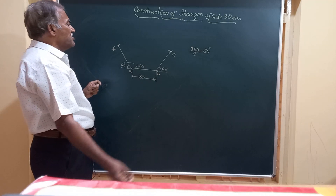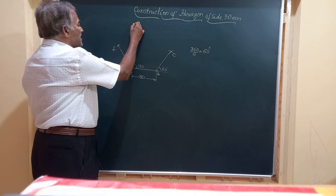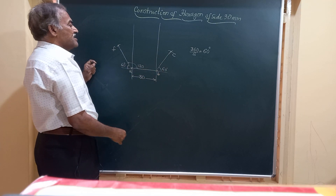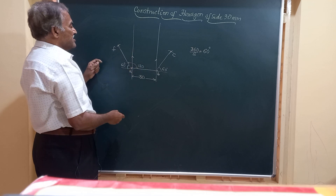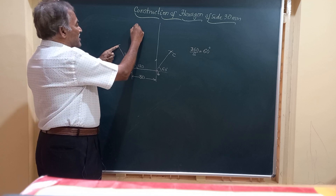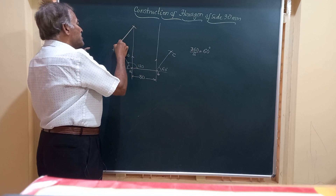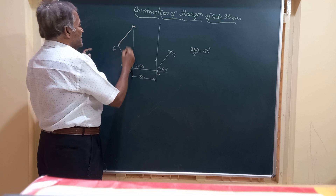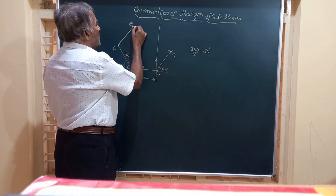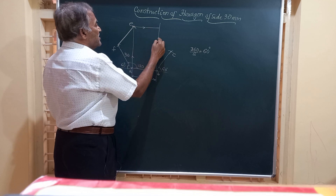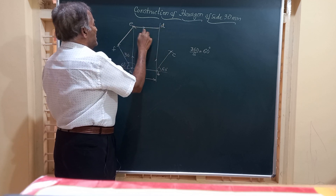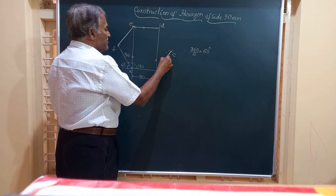To get the remaining three sides, the simplest method is to draw a vertical line through point A and another vertical line through point B. Taking F as center and radius equal to 30 mm, draw an arc to cut the vertical line — this gives point E, the third side. Drawing a horizontal through E, it will meet the vertical drawn through B at point D, giving us four sides.